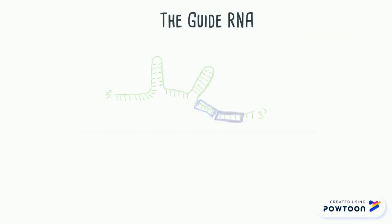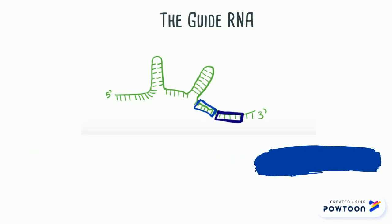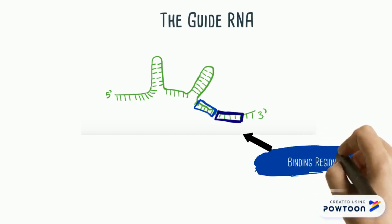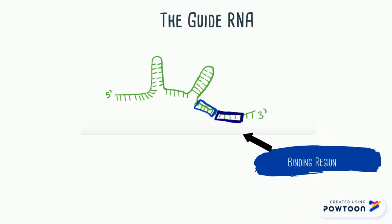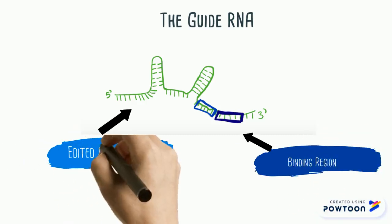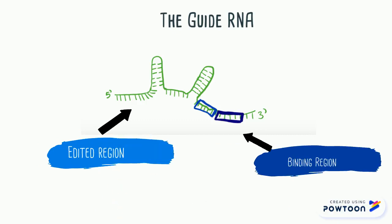The PEG RNA has two distinct pieces to it, similar to the guide RNA we saw in the CRISPR-Cas9 system. One piece is the complementary sequence, which goes and binds to the nicked DNA. The second piece is the RNA sequence, which codes for the new edit.